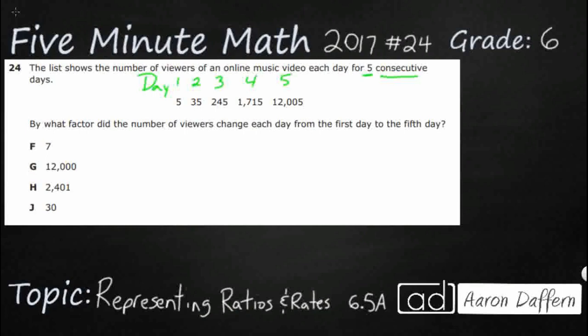By what factor did the number of viewers change each day from the first day to the fifth day? So our only clue is something changed from day 1 to day 5, which is obvious, the numbers are getting much bigger and we have to figure out what this factor is. So when we are dealing with ratios and rates, sometimes we will talk about a scale factor. So a scale factor, or sometimes just called a factor, is the relationship between these two numbers.